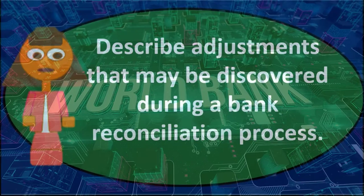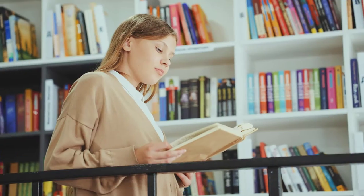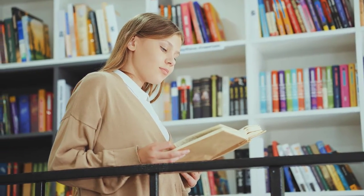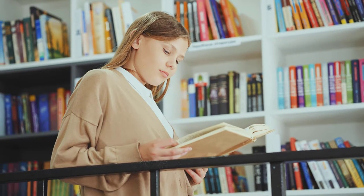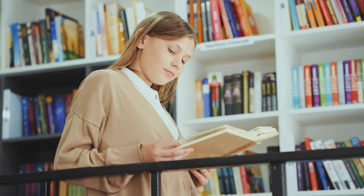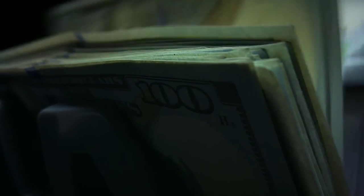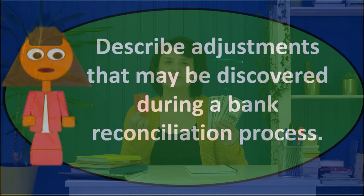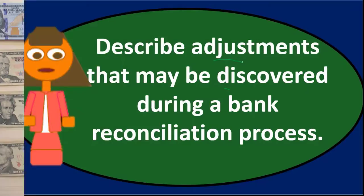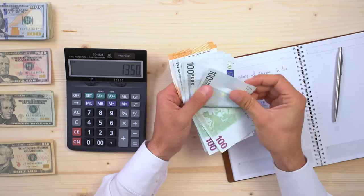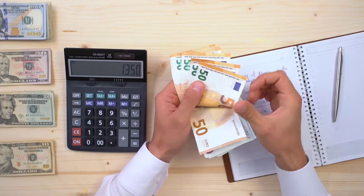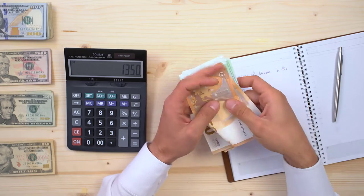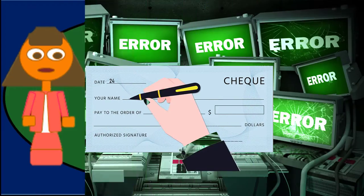If there's a deposit on the bank statement that's not on our books, it could be that an investment came due — a CD or savings account — and it automatically got deposited into our checking account. We possibly didn't know about it until we got the bank statement. So we'd need to record it: debit the checking account, credit the investment asset account where we had recorded it, and also credit any earned interest or dividends as revenue.